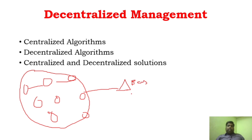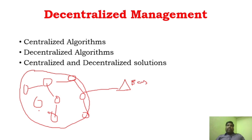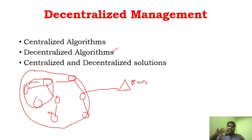For a centralized algorithm, the time delay will be more because all the information has to be collected by the base station from all sensor nodes, and only then it can take a decision and process the data. That requires time delay, more overhead, and more energy consumption. In order to overcome that, we go for a decentralized algorithm — where instead of going to the base station for every process, these sensor nodes can decide locally with their neighbors and solve the problem.